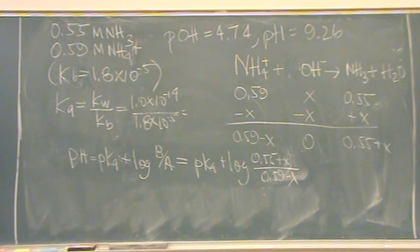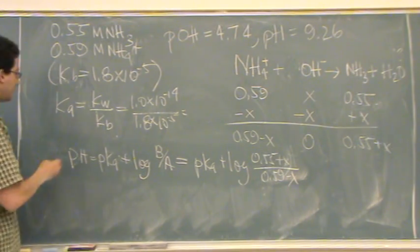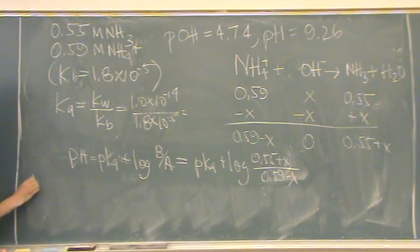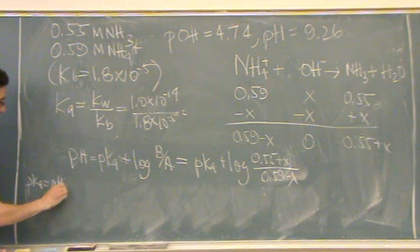Okay, the other piece of information that I have is that when I'm adding this to get to the POH of 4.74, the thing is I'm going to a special point that's going to help me solve this problem. Yeah, I'm coming to the midpoint. And how do I know that? Because PKA. Yeah. The PKA is going to equal the pH.